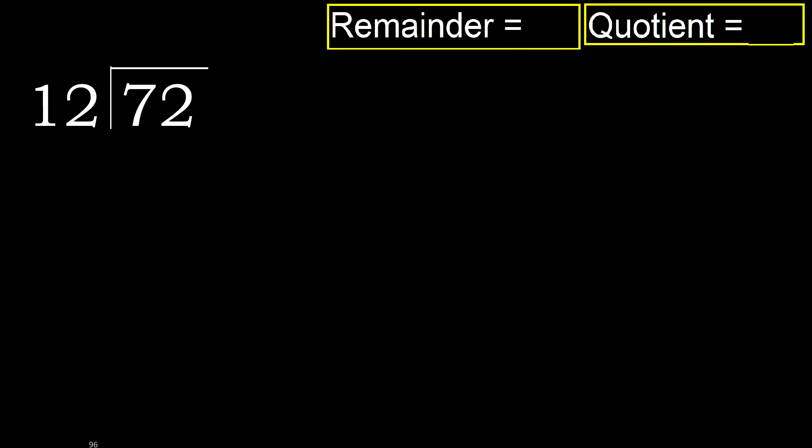72 divided by 12. 7 is less than 12, therefore move to the next digit.